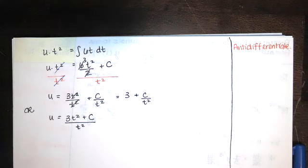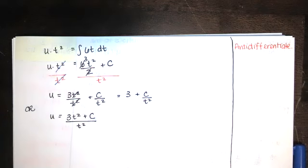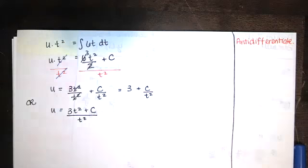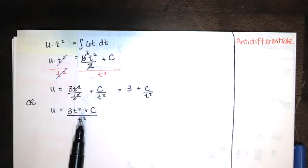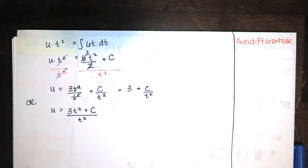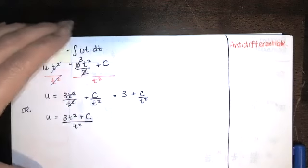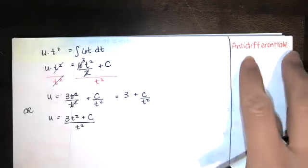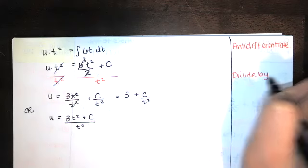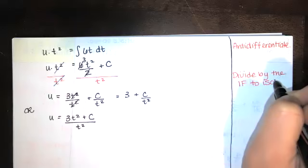If I were solving a first-order linear differential equation, I would probably simplify it as 3 plus c over t squared. But if I'm solving a Bernoulli equation, I often like to have u in the form of a fraction, just in case u involves a negative power of y — then I can flip both sides and that makes the algebra easier. So we've anti-differentiated, then divided by the integrating factor to isolate u.